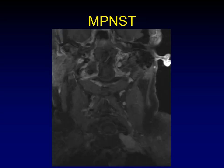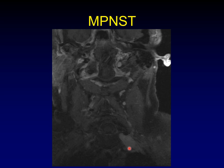A malignant peripheral nerve sheath tumor — the malignant version of a schwannoma — can expand and travel along a nerve. It looks very much like a schwannoma in most cases, but it belongs in the category of malignancy for our discussions.